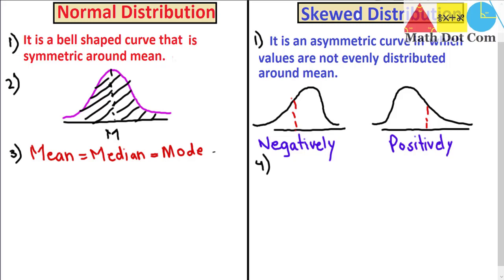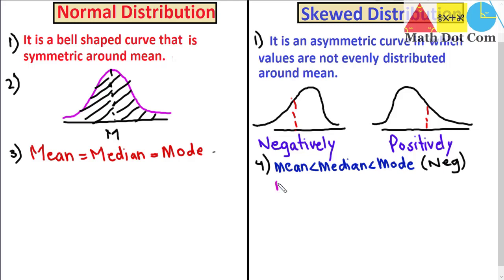In negatively skewed distribution, mean is less than median and median is less than mode. While in positively skewed distribution, mode is less than median and median is less than mean. This is the main difference between them.